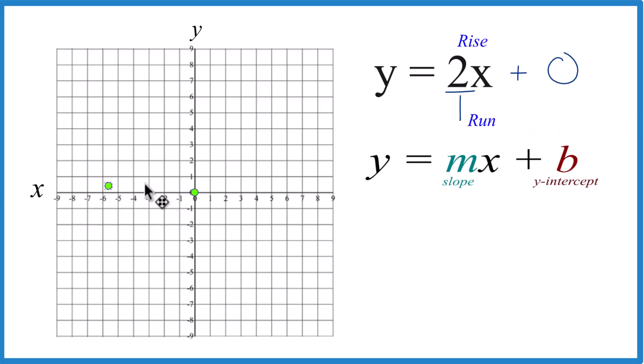So we would go to our y-intercept here and we rise the 2, so 1, 2, and we go over 1. We run 1. There's our line. Let's do another point. Up 1, 2, over 1, and you can see the line forming.